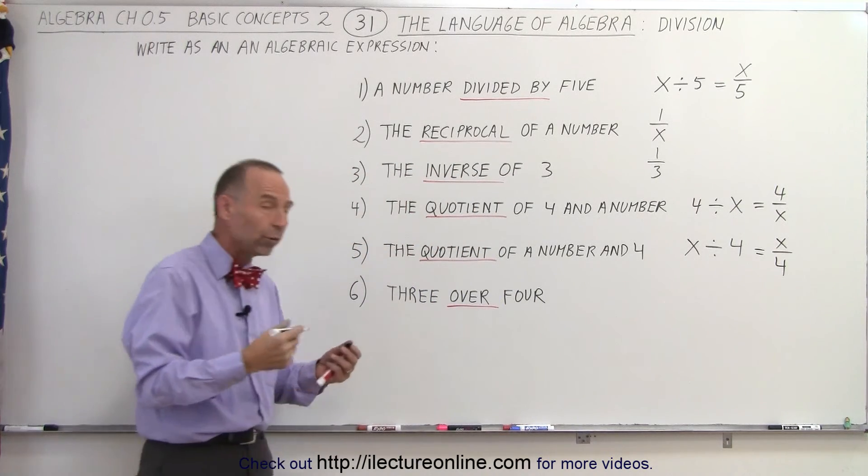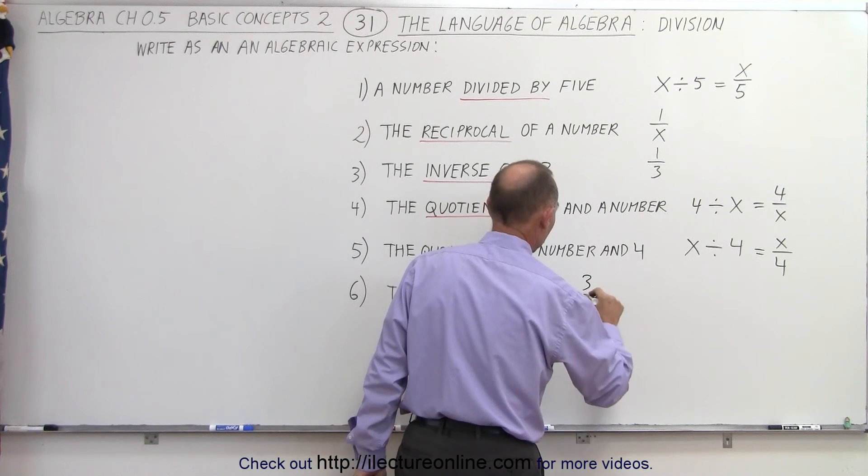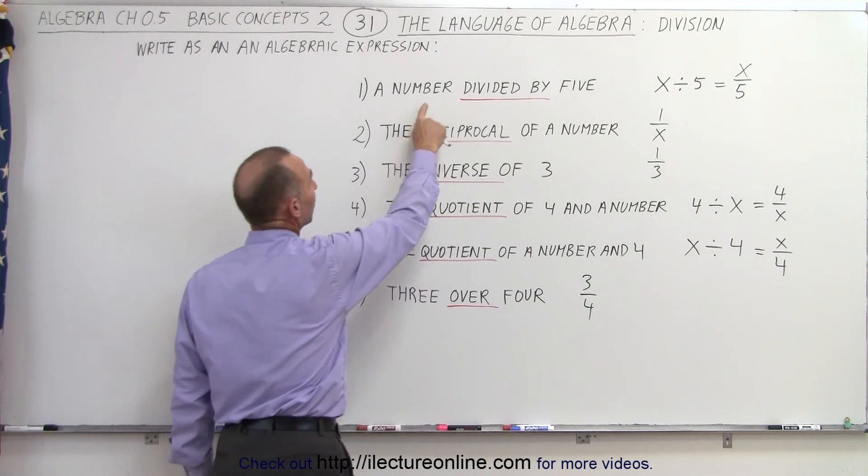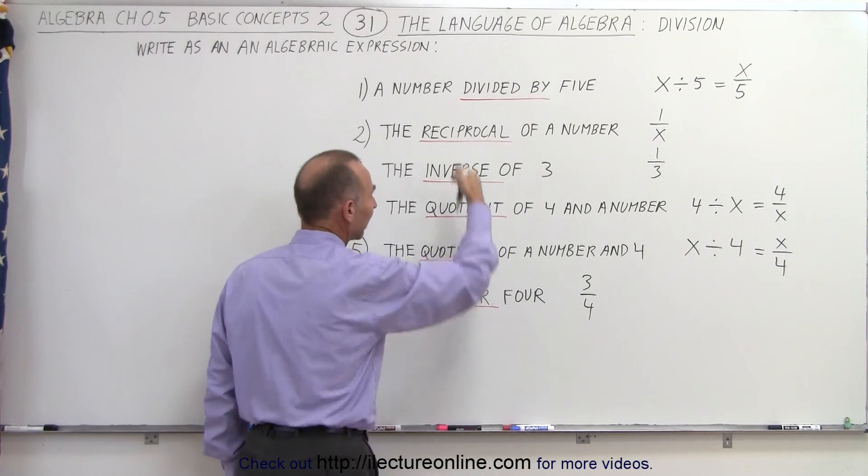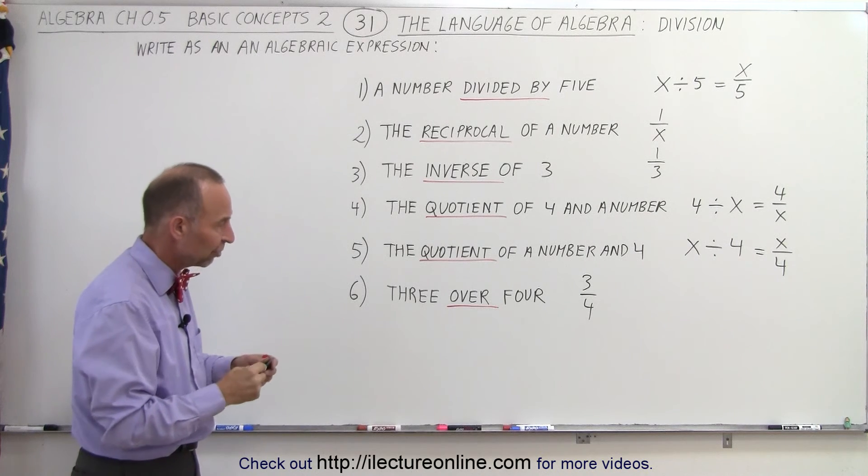And finally, when you see the word over, that simply means 3 over 4 is 3 over 4, or 3 divided by 4. So, a number divided by another number, or 3 over 4, essentially is the same thing. Write it as a fraction, or write it as a division.